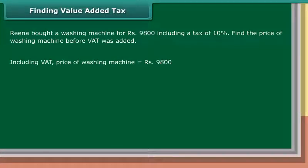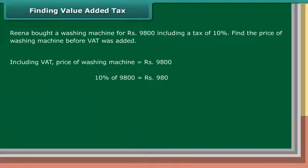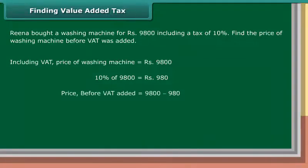Including VAT, price of washing machine is equal to Rs. 9,800. 10% of 9,800 is equal to Rs. 980. Price before VAT added is equal to Rs. 9,800 - 980, which is equal to Rs. 8,820.